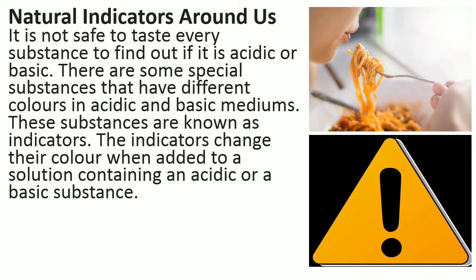There are some special substances that have different colours in acidic and basic mediums. These substances are known as indicators. The indicators change their colour when added to a solution containing an acidic or a basic substance. So indicators are those substances which determine whether a given substance is acidic or basic by changing their colour.